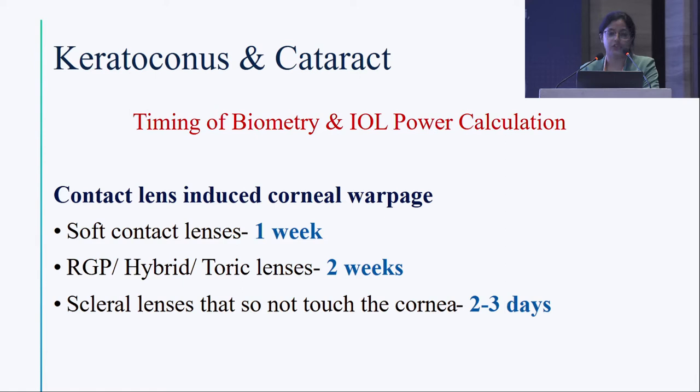For soft contact lenses, patients should be off lenses for one week before measurements. For RGP, hybrid, or toric lenses, two weeks. For scleral lenses that do not touch the cornea, two to three days is sufficient. We take this into account in refractive planning, but we conveniently ignore it when doing biometry for cataract — yet the timing is equally important.